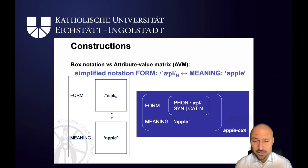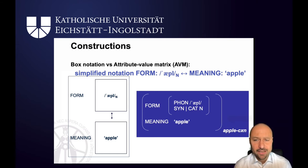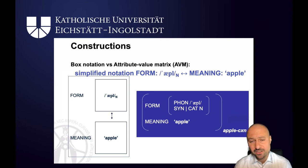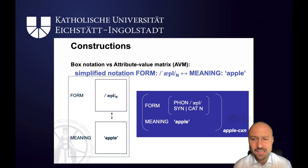Very often you will see an even simpler notation. In light blue you see a simplified notation: you've got the attribute form which has apple and indicates that it's a noun, to the left of a double arrow, and to the right you've got the meaning, which is just represented as apple. The main point of this slide is just to show you that all of these representations have form and meaning — at the end of the day they're just different ways of formalizing, of representing the same thing.